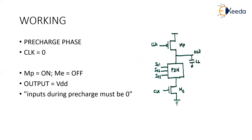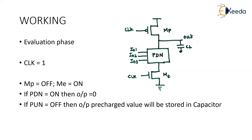To recap: during the pre-charge phase, the clock is zero, inputs are zero, MP is on, and the output is pre-charged to VDD. When the clock turns to one, MP turns off and ME turns on. If the PDN is on, the output discharges to ground; if the PDN is off, the output retains the pre-charged value stored in the capacitor.